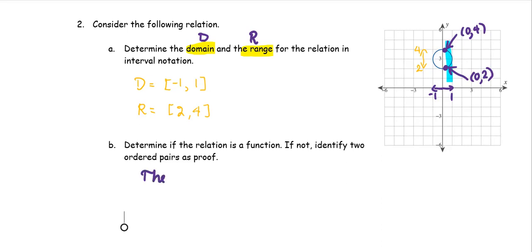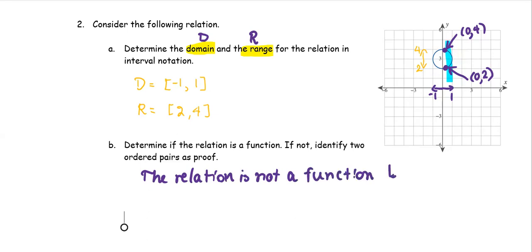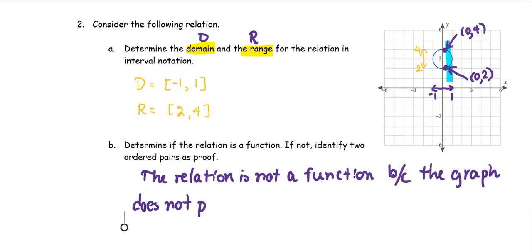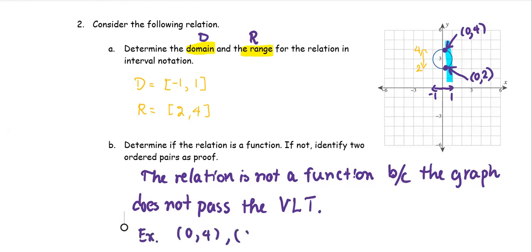The relation is not a function. The graph does not pass the vertical line test. The two ordered pairs as proof are (0, 4) and (0, 2).